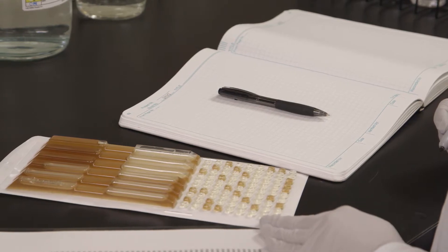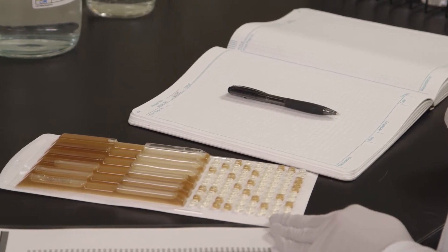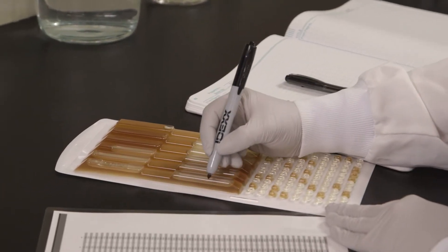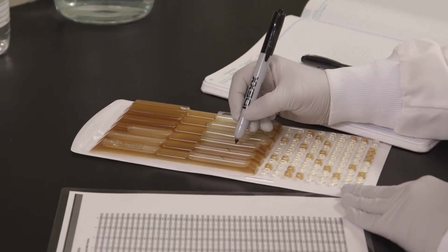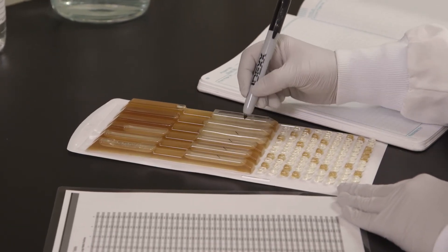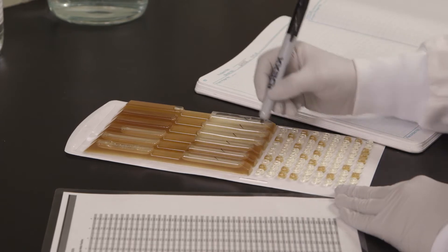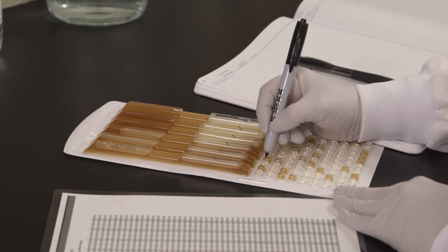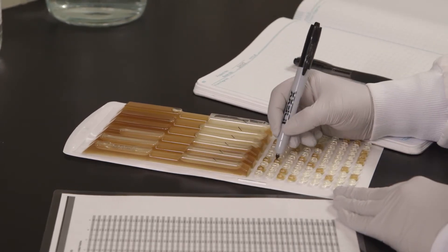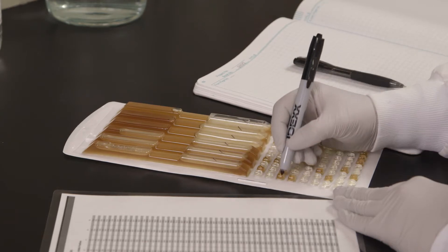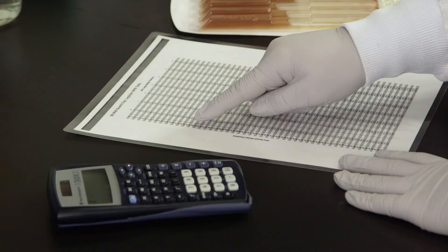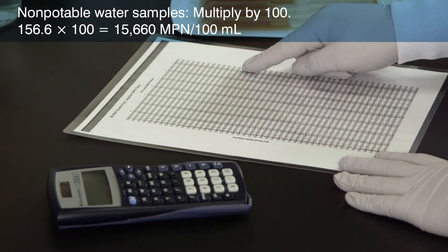After incubation, look for any indication of brown color and or turbidity greater than the negative control, which indicates a positive well. Mark each brown or turbid well, count the marked wells, and then refer to the MPN table included with the QuantiTray LEG-ALERT trays.